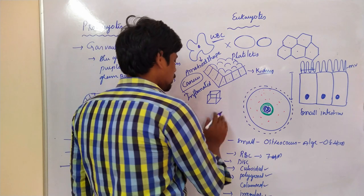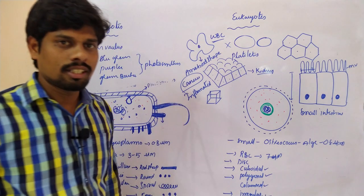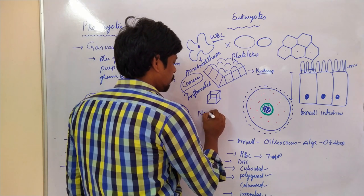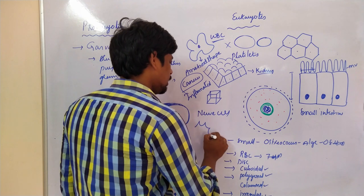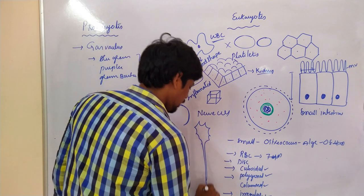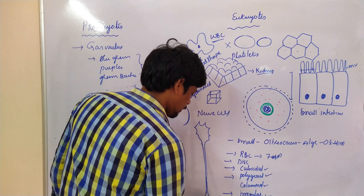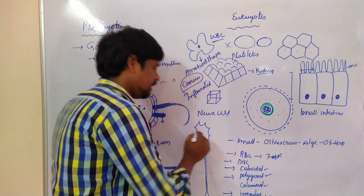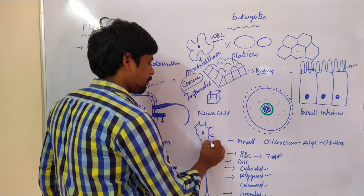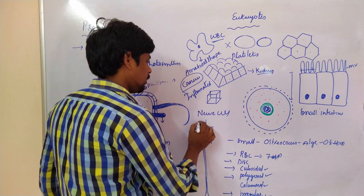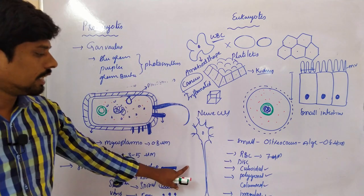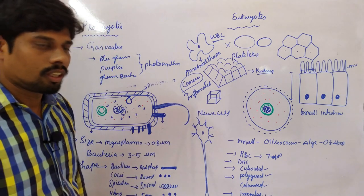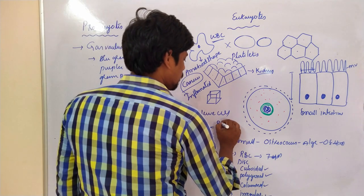Stellate or branched cells are the longest cells in eukaryotes. Such cells are called nerve cells. The nerve cell is the longest cell and has a branched structure.